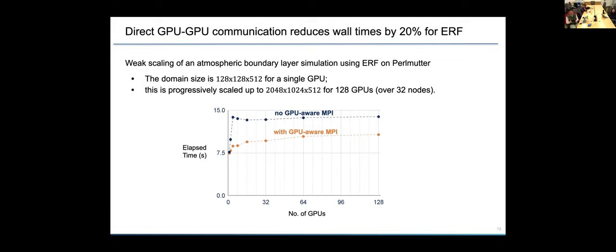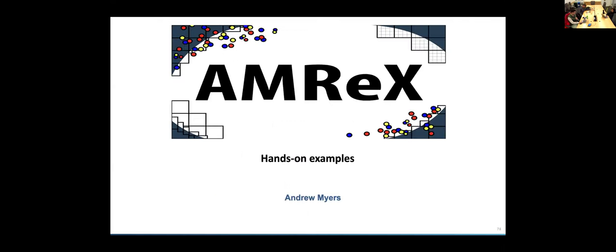But coming to a real application. Here's a scaling study with again, the ERF code, the atmospheric boundary layer simulation. The blue line here shows the performance. So this is weak scaling, which basically means that as we increase the number of processes, we increase the problem size proportionately. So the blue line here is without the GPU aware MPI. And you can see a large jump in the wall time going from one GPU to two GPU to four GPUs, which is all within a node. And then it's this nice horizontal line from there on, which we would like for weak scaling. For the orange line here with GPU aware MPI, you see much less of a jump going from one to four GPUs. And then another jump going to multiple nodes. But overall at the multiple nodes, you see at least a 20% reduction in wall time going from not GPU aware MPI to GPU aware MPI.